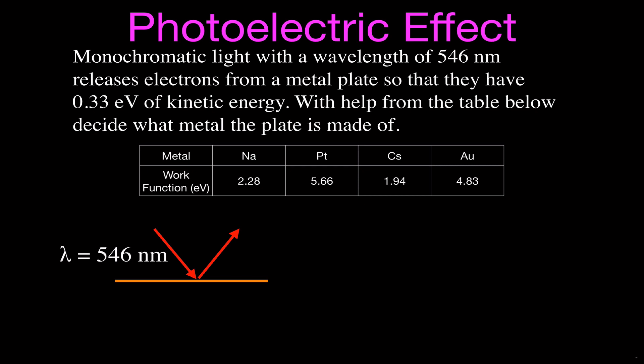We are told in the problem that the wavelength of light is 546 nanometers, and that the electrons, when they're ejected from that plate, have 0.33 electron volts of kinetic energy, and we want to know what the plate is made of, so we need to figure out what is the work function for that piece of metal.